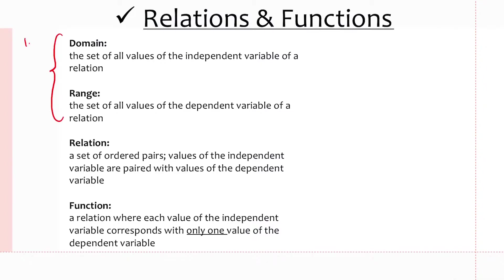Domain and range — we'll cover these in more detail in section 1.4, but briefly: the domain is the set of all values of the independent variable of a relation, so domain is always about the x values. The range, which is the set of all values of the dependent variable, is always about the y values. A relation is a set of ordered pairs, such as (x, y), (1, 2), (3, 4), where values of the independent variable are paired with values of the dependent variable.